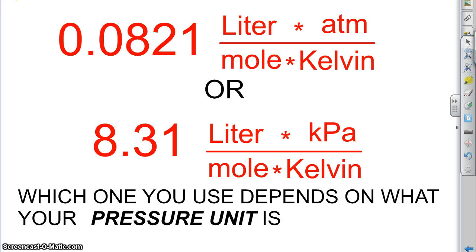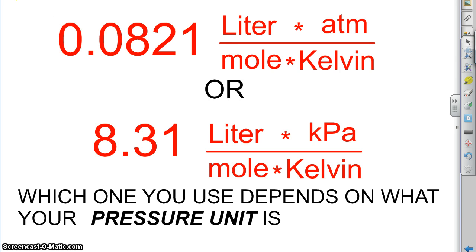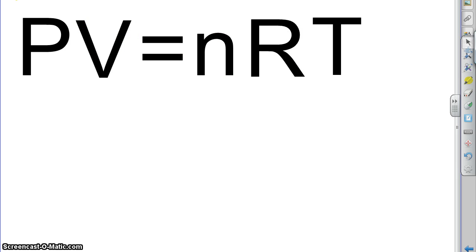Which one we're going to use depends on what pressure unit we're using. We'll get more to that in a little bit as we get into pressure. So, let's go back to the formula. That is the R, the ideal gas constant. It's a number. It means a certain number with a certain unit. It's always the same.